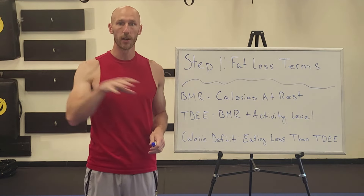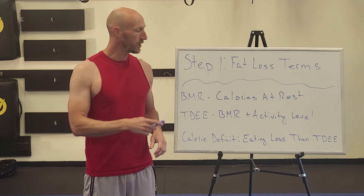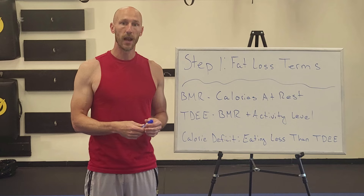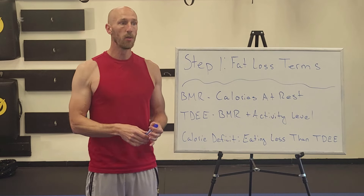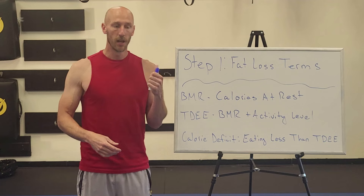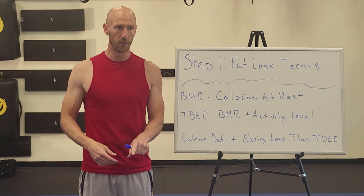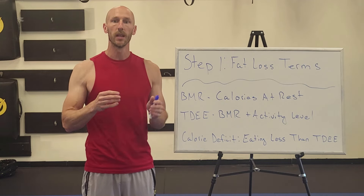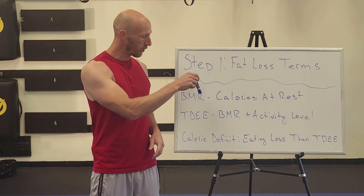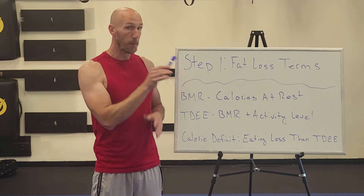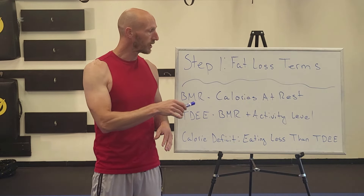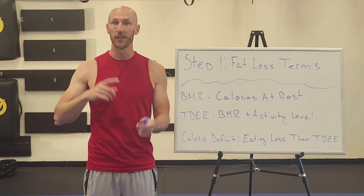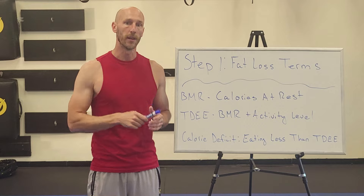Say we figure this out — I'm going to show you how to do that in the next section. But say we know we are burning roughly 2,500 calories a day. From there, we know that we need to be eating less than 2,500 calories a day in order to lose weight and burn fat. I'm going to give you a range for that calorie deficit, and I'm going to show you the equation to figure out your personal BMR and total daily energy expenditure, plus a free tool to make this very simple.